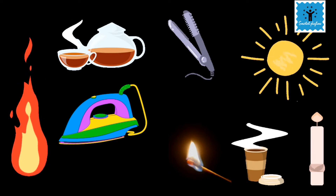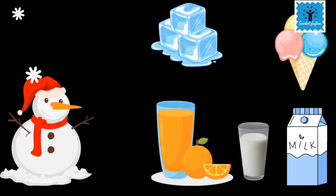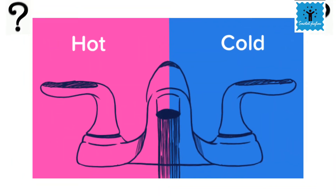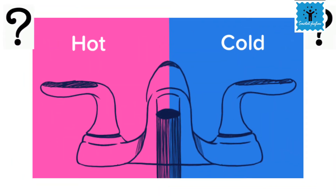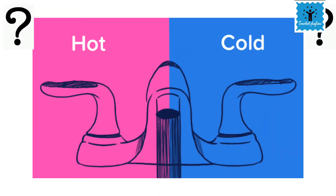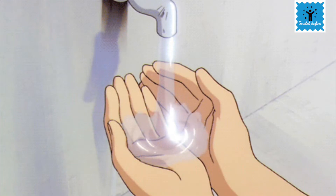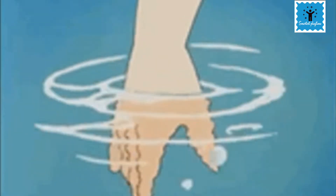Even among hot objects, some may be hotter than others. In the same manner, among cold objects some may be colder than others. So if I ask you how to decide the relative hotness and coldness of an object, the first answer that comes is simply by touching it.